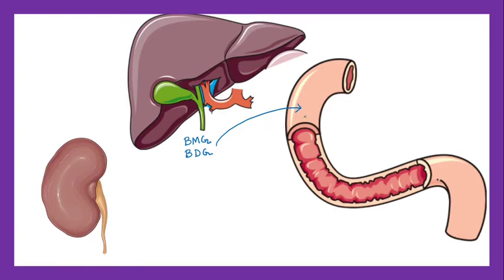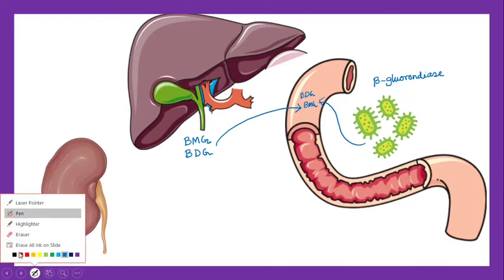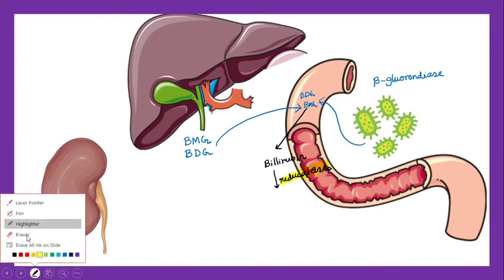In the gut, the bilirubin diglucuronide and monoglucuronide are acted upon by different bacteria. One key bacterial enzyme is bilirubin beta-glucuronidase, which removes the glucuronide and releases free bilirubin. This free bilirubin is then acted upon by certain bacterial reductases, forming something known as urobilinogen.